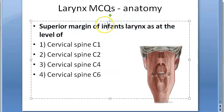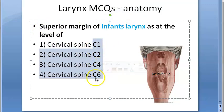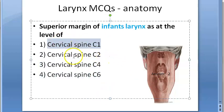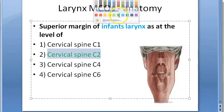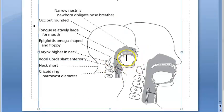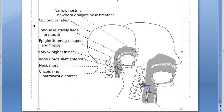Question: The superior margin of an infant's larynx is at the level of which cervical spine level — C1, C2, C4, or C6? The answer is C2. So the superior margin of an infant's larynx is at C2. You should know that it is higher in an infant; for an adult it is at approximately C4.